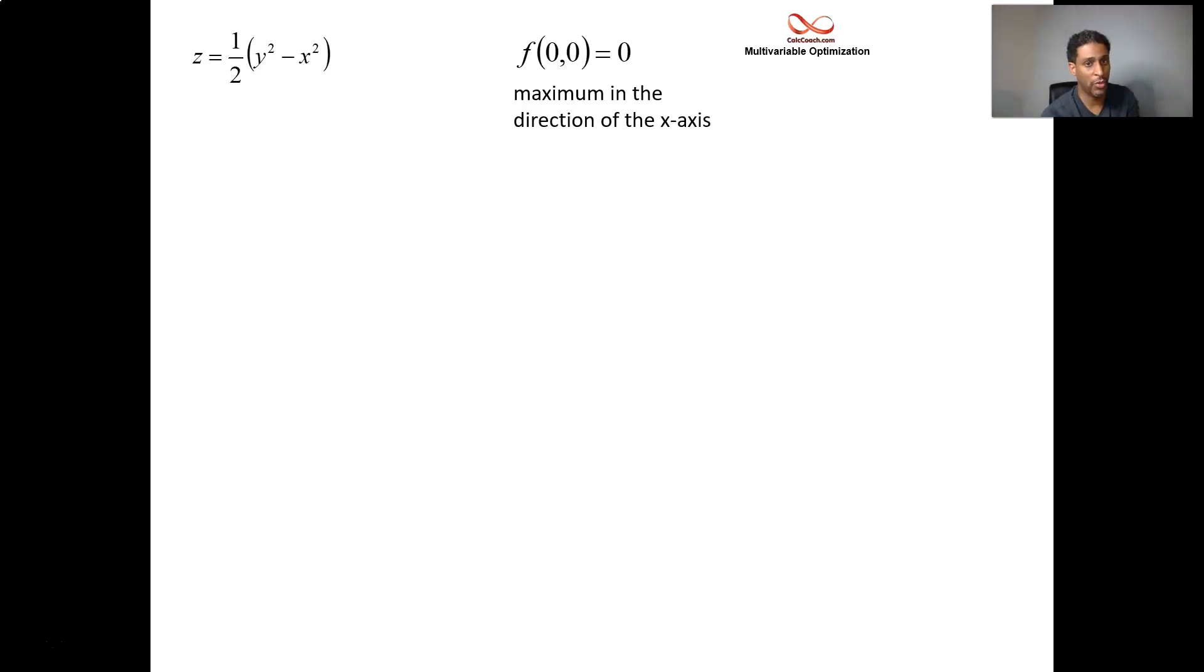But if you let x be equal to zero and let z equal one half y squared, that's a parabola that opens upward. So you have a minimum in the direction of the y-axis - maximum and then minimum at the same time, depending on which direction you have. And so what this is called is the graph is in the shape of a saddle. You have your legs going around the part that is the maximum, and then you have the other part of the saddle running down the horse. That's the minimum where you're sitting at. It's called a saddle point.